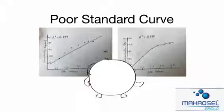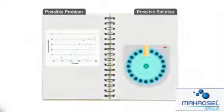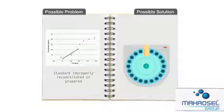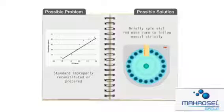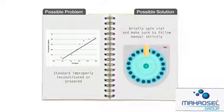If you are getting a poor standard curve, then this may be caused by the standard being improperly reconstituted or prepared. In this case, briefly spin the vial and confirm the standard is thoroughly dissolved.